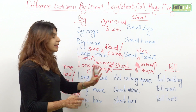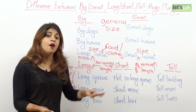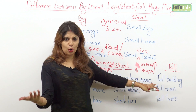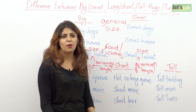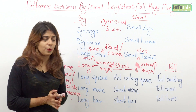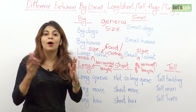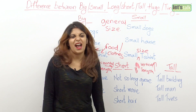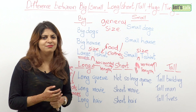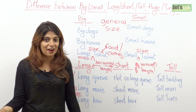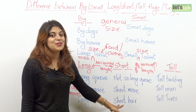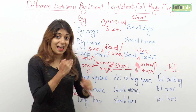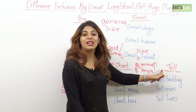Now short is used for horizontal length as well as vertical length. The queue is not so long. The movie was pretty short — so you're talking about time duration. And I don't like short hair; I like long beautiful hair. So when you're talking about hair you can also use the word short.